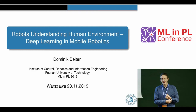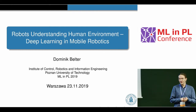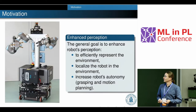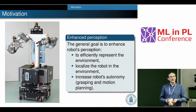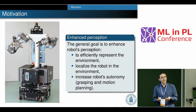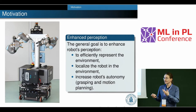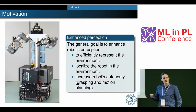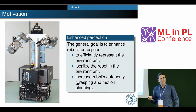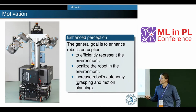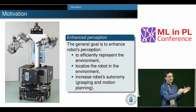I work at Poznan University of Technology and during this presentation I would like to share our experience with neural networks in mobile robotics. Here is our robot — we are mainly interested in enhancing the perception of mobile robots. This is the robot 4.0, which we use in our project. It's a mobile platform that can navigate in the environment. We have some arms, but the most important parts are the sensors: a lot of RGB cameras, Kinect sensors on the wrist and top, and laser scanners.